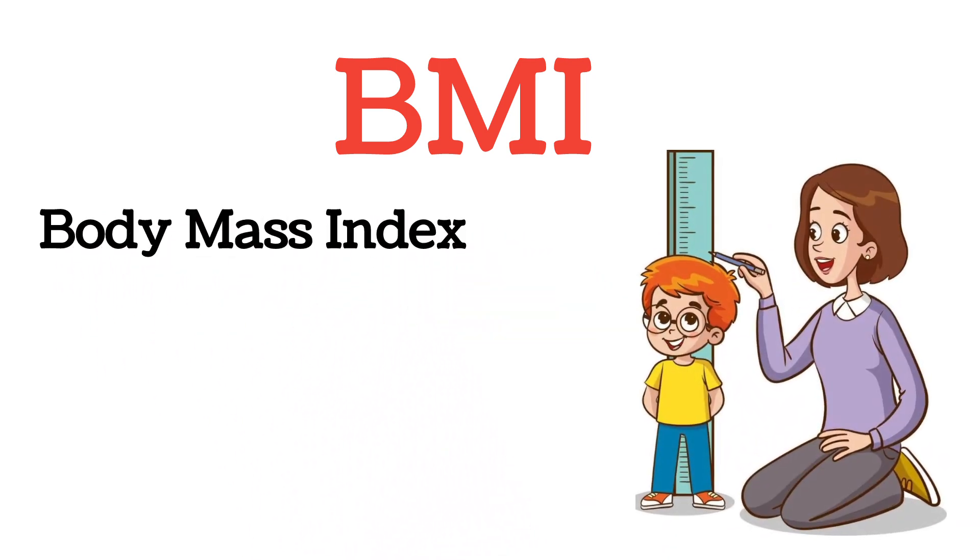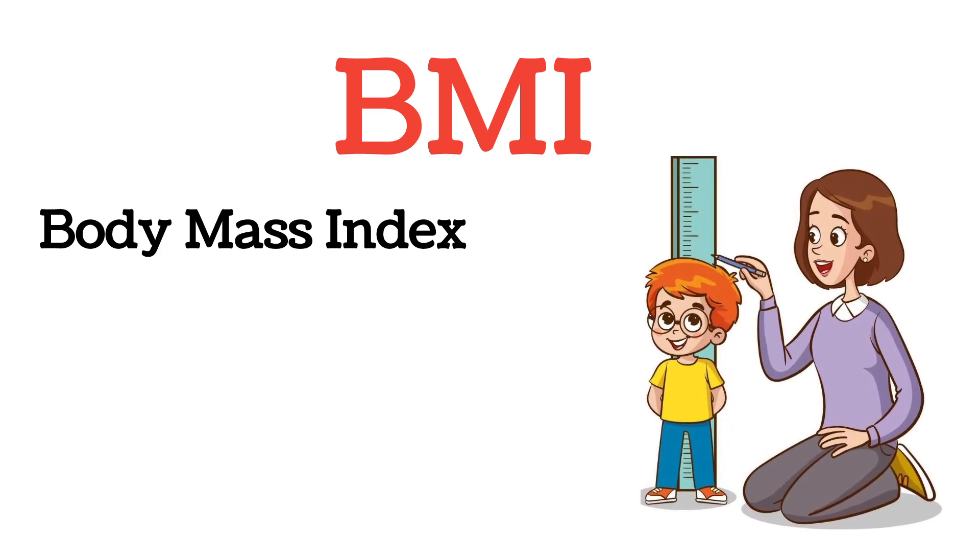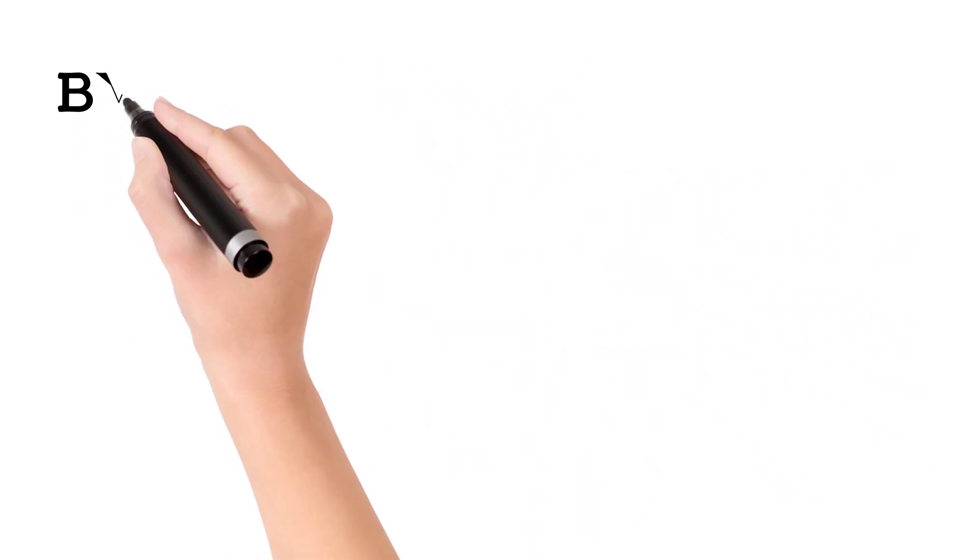As per the person's height, how much the person should have a weight. With this BMI, we can calculate whether the person has normal weight or obese or underweight by a simple formula.